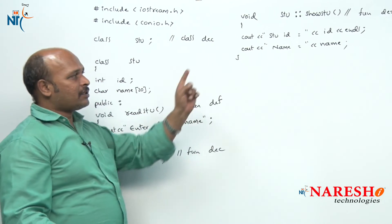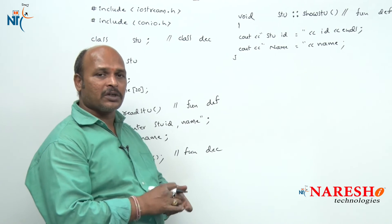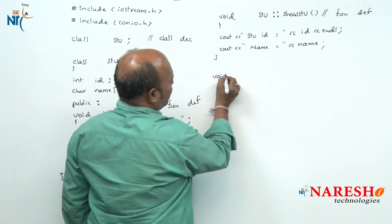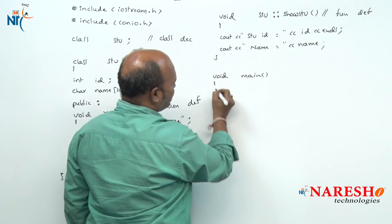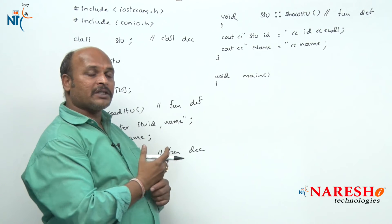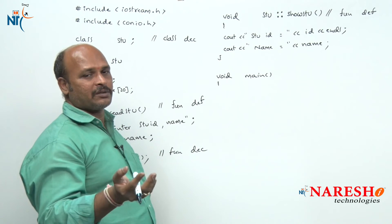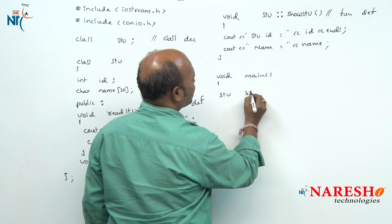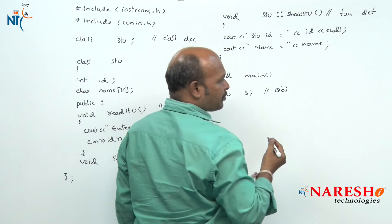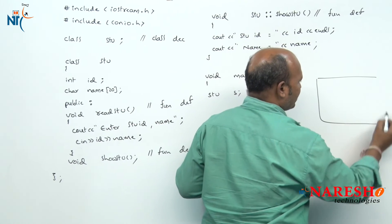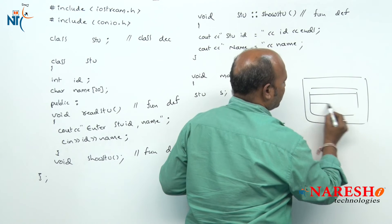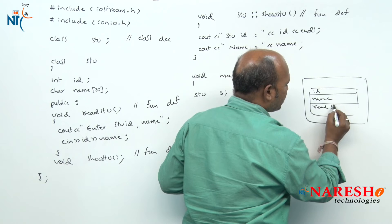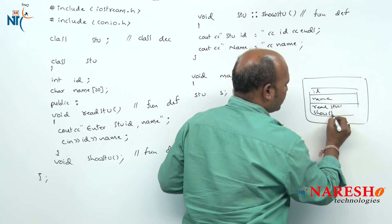Function declaration and definition are now complete. The third stage is calling. Generally calling is conducted from the main function, so void main. In the main function, first we have to create the object to allocate memory — so stu s is the object. When the object is created, memory is allocated: it contains id, name, read_student, and show_student.